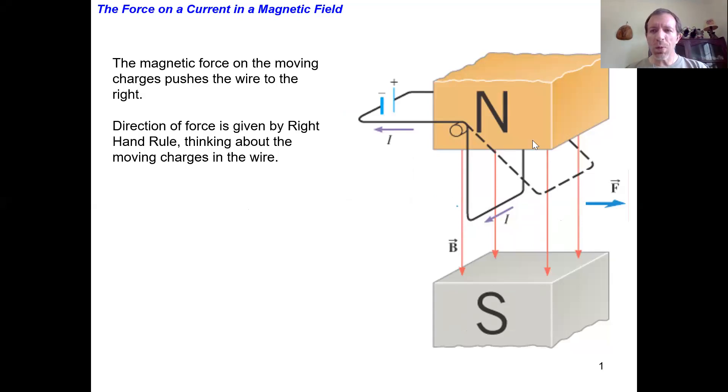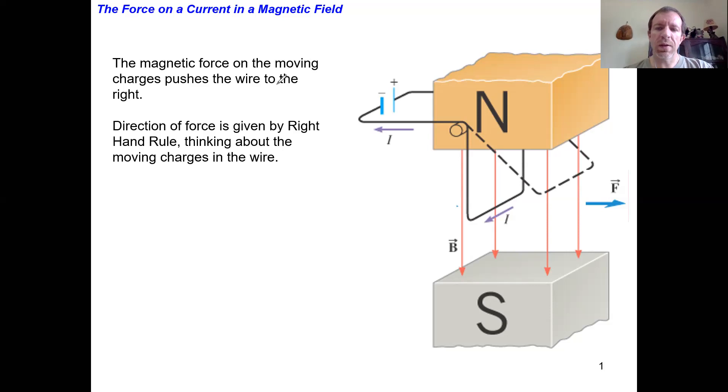All right, so what we have here over on the right-hand side is an image where we've got basically a magnetic field. A magnetic field always starts on north poles and ends on south poles, so we can see that the magnetic field there is directed downwards. And then we've got basically a wire that's carrying current, and that current is, let's see, it's right there, that current is coming out of the page, or out of the screen, I guess.